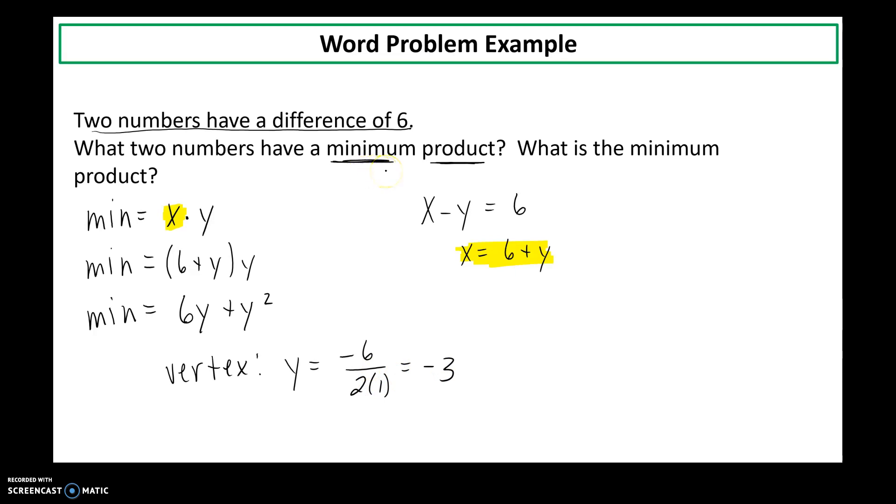So what two numbers have a minimum product? Well my first number, the y coordinate, is going to be negative 3. So then how do I go back and find the x coordinate? That's where I go to my given information. x is equal to 6 plus, I replace y with the value we found.